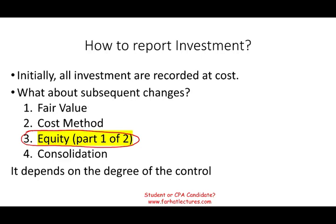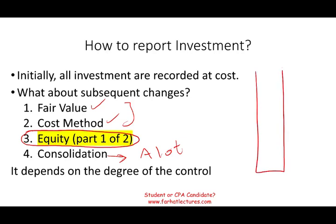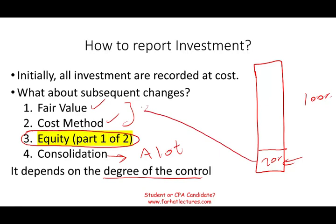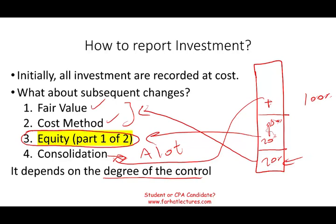The prior two methods, fair value and cost accounting, were covered in the prior session. Consolidation is going to be covered in a lot of lectures. Remember this graph I used earlier — if this is 100%, how do you report your investment? Depending on the degree of control: if you purchase up to 20%, you would use fair value or the cost method. Between 20% and up to 50%, this is where you would use the equity method. And if you have more than 50%, this is where you would have to use consolidation.